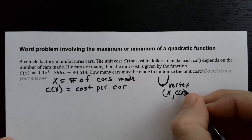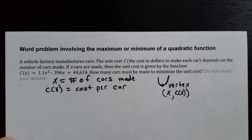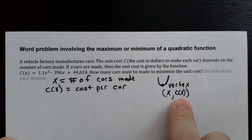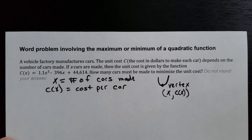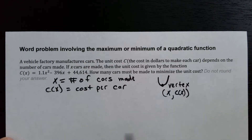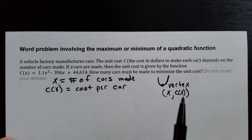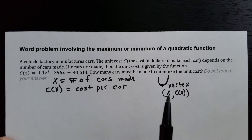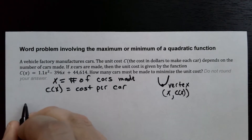The vertex will be written as X comma C of X — that's like our X and Y, but since we're dealing with C we write Y as C of X. The problem asks how many cars must be made to minimize the cost, so we're looking for the X part of the vertex.